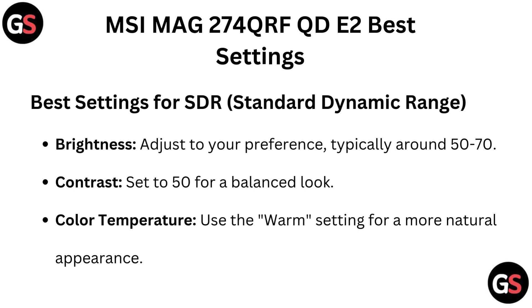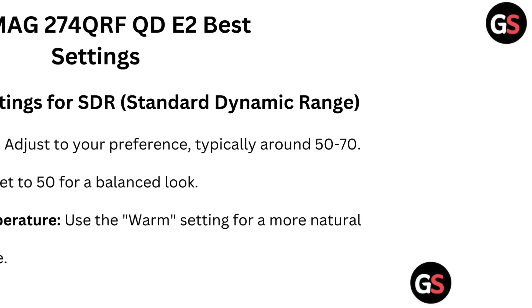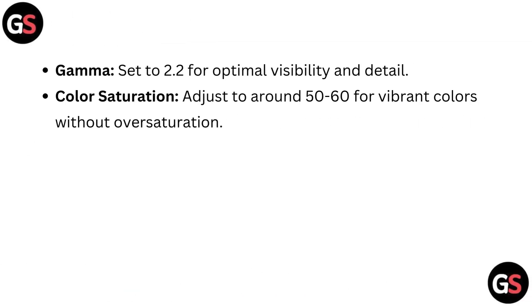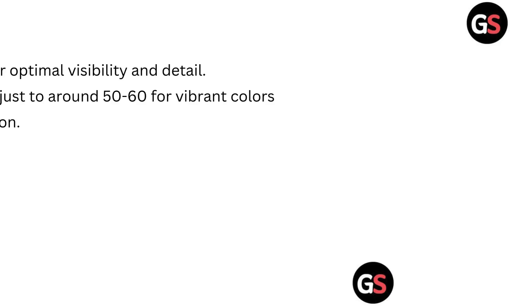Color Temperature: use the warm setting for a more natural appearance. Gamma: set to 2.2 for optimal visibility and detail. Color Saturation: adjust to around 50–60 for vibrant colors without oversaturation.